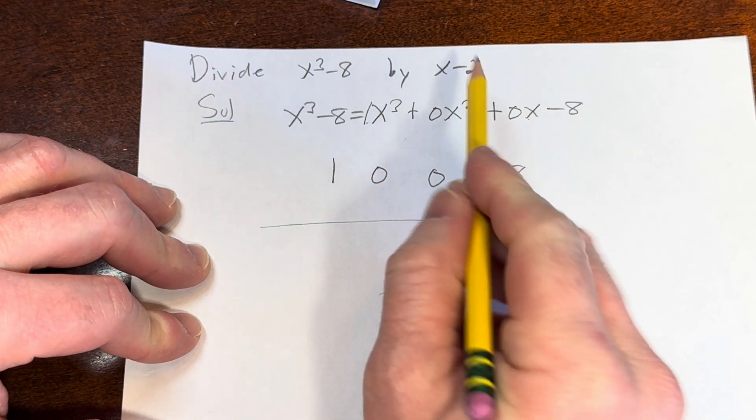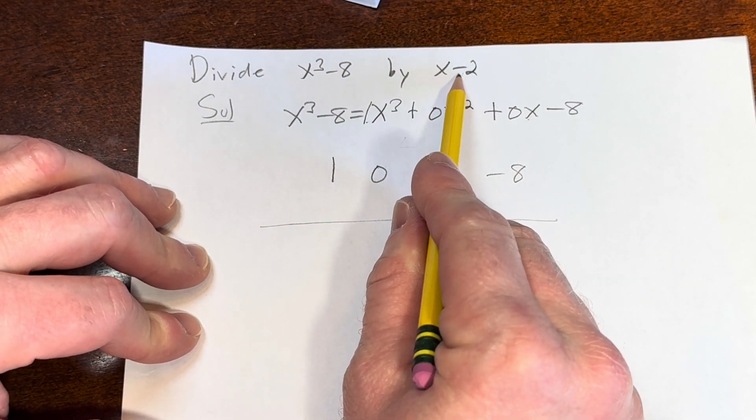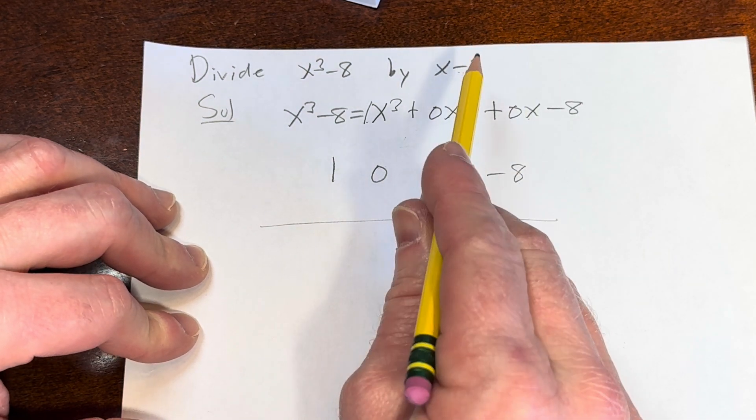We draw a line and then this number here we flip the sign. So it's negative 2, so we make it positive 2.